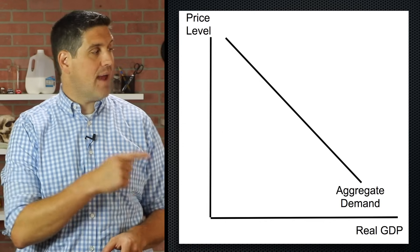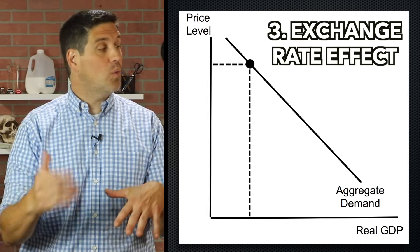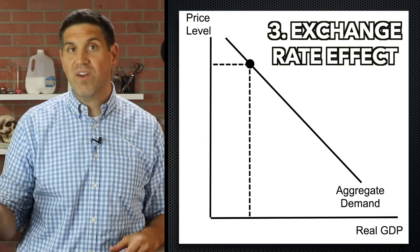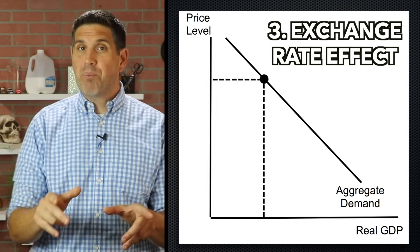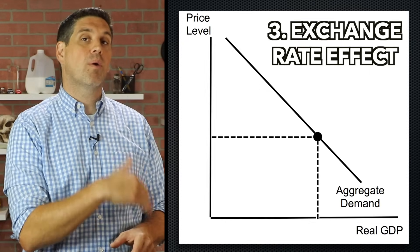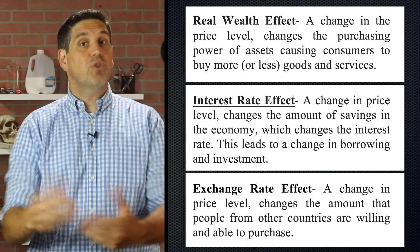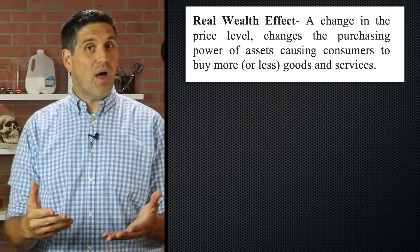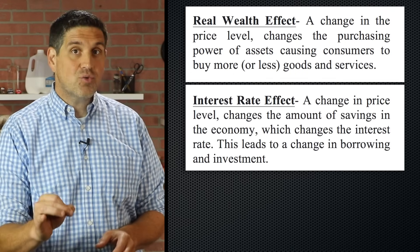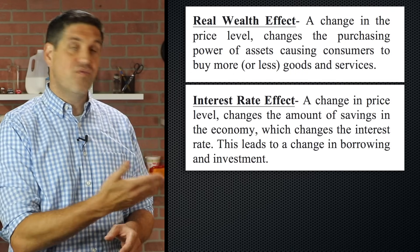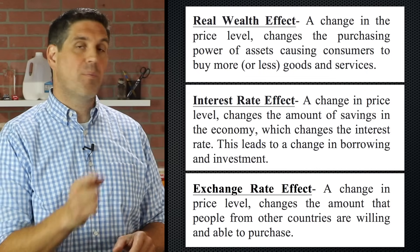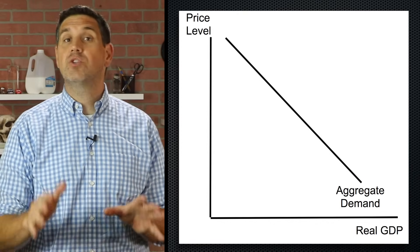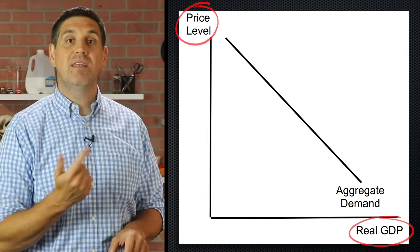The last reason why this is downward sloping is the exchange rate effect. When prices increase in one country, other countries don't want to buy those higher-priced goods, so they go buy from a different country instead, and the quantity demanded falls. And when price level falls, this country is going to export more goods and services because other countries want to buy more of our stuff. So there are three reasons why aggregate demand is downward sloping: the real wealth effect accounts for the behavior of consumers, the interest rate effect accounts for the behavior of borrowers, investors, or businesses, and the exchange rate effect accounts for the behavior of people in other countries. Each of these shows an inverse relationship between price level and the GDP demanded.